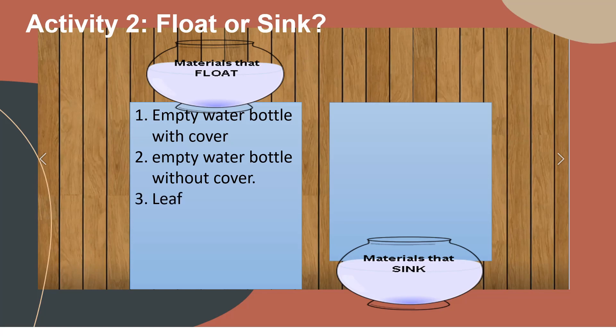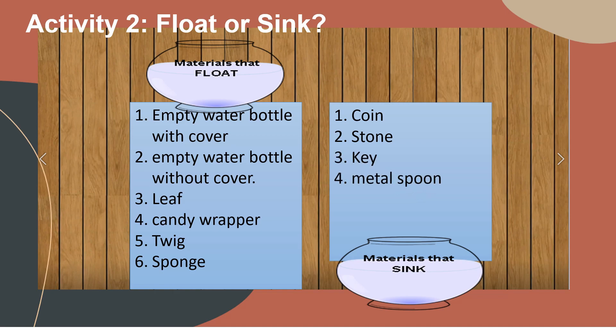As we have observed, materials that float are empty water bottle with cover, empty water bottle without cover, leaf, candy wrapper, twig, and sponge. And materials that sank are coins, stone, key, metal spoon, plastic spoon, and cotton.